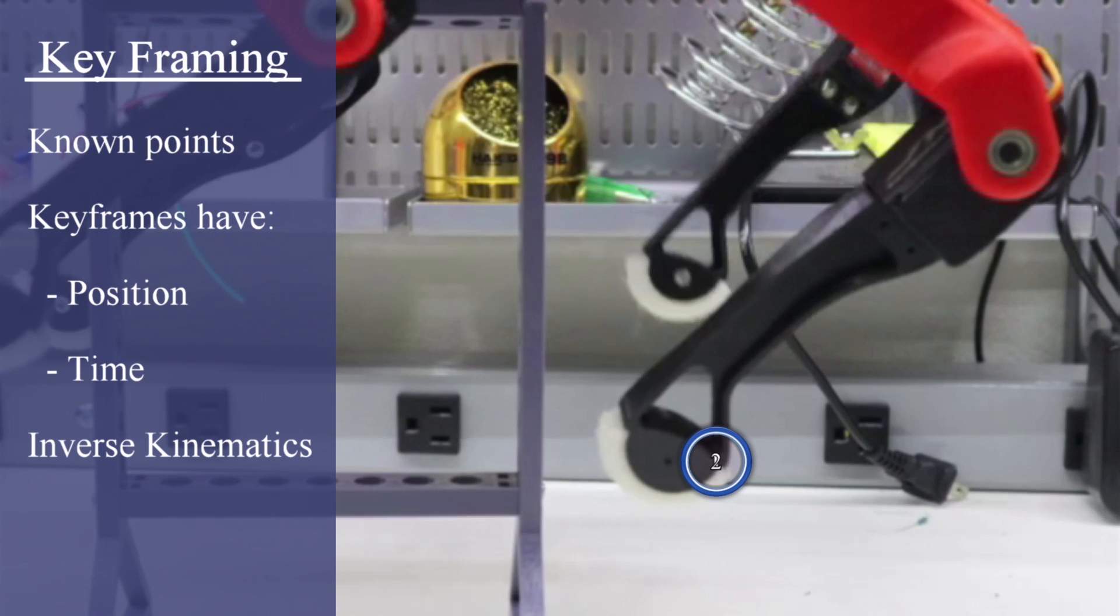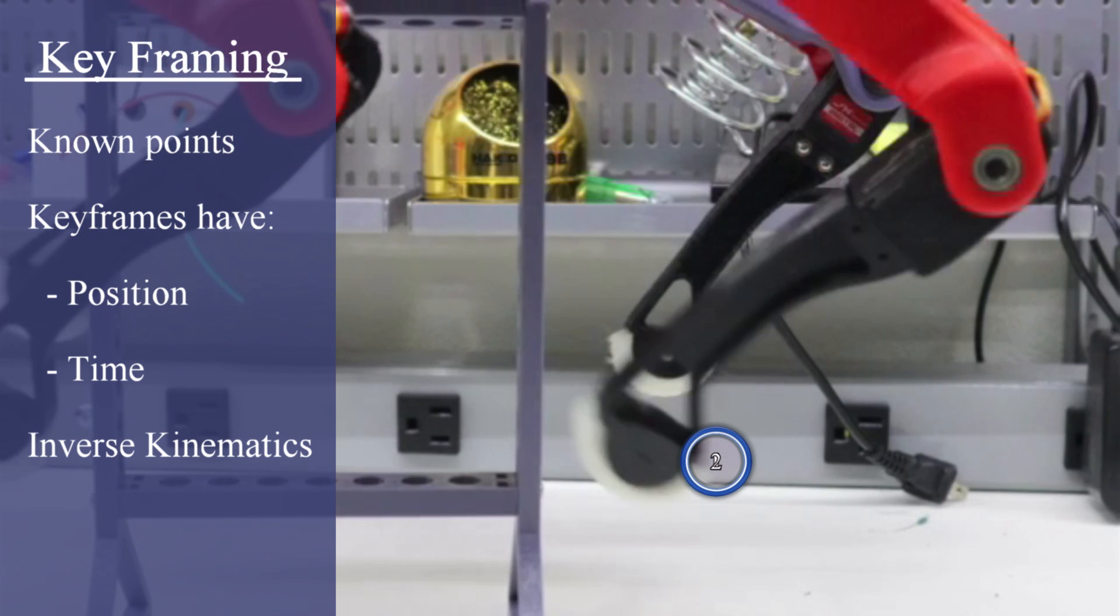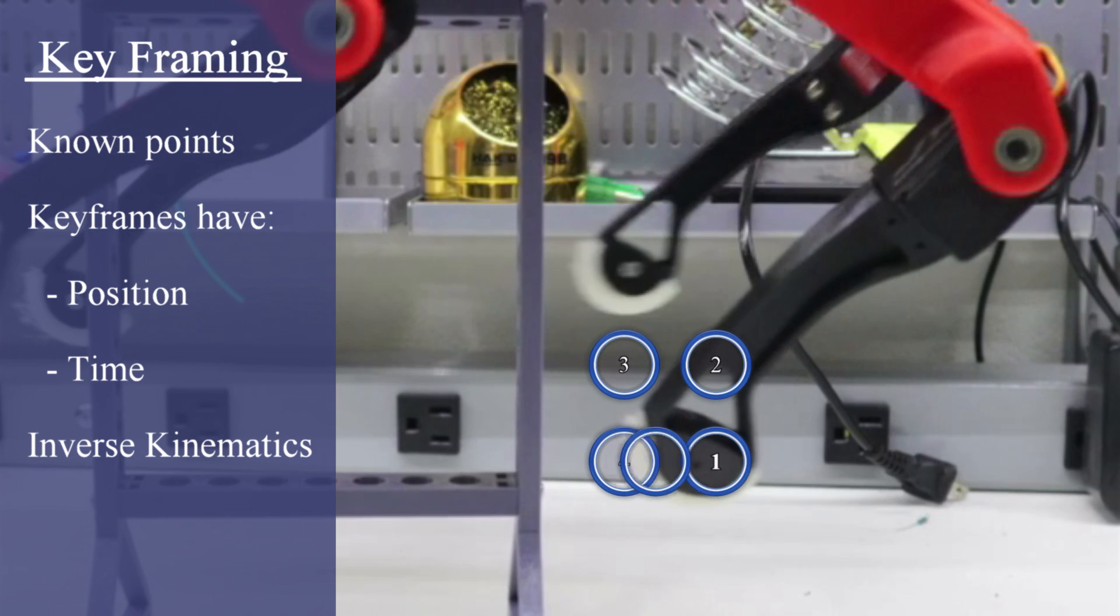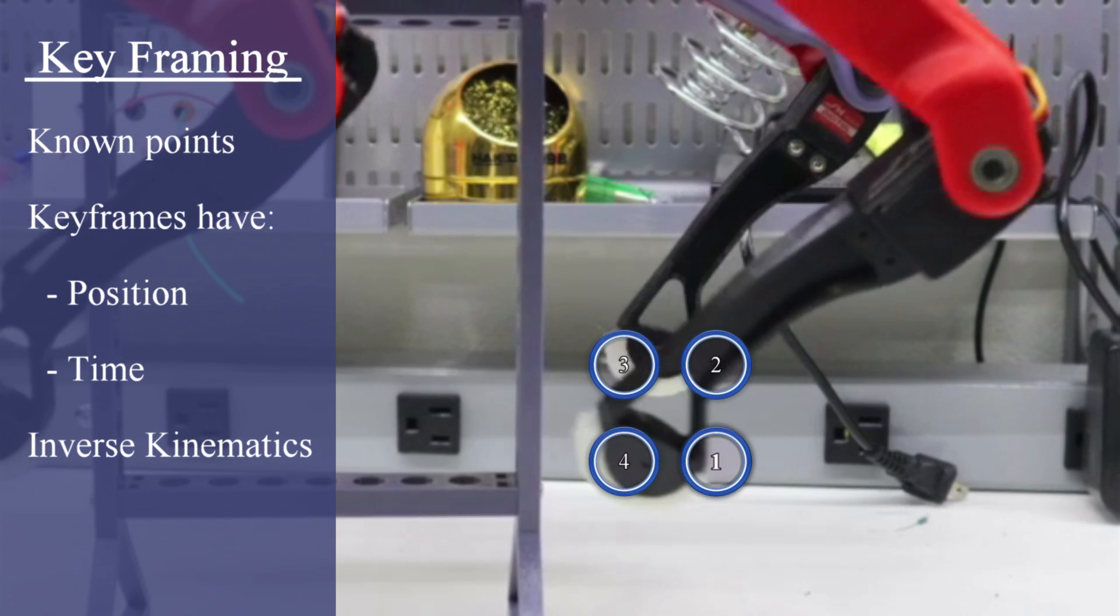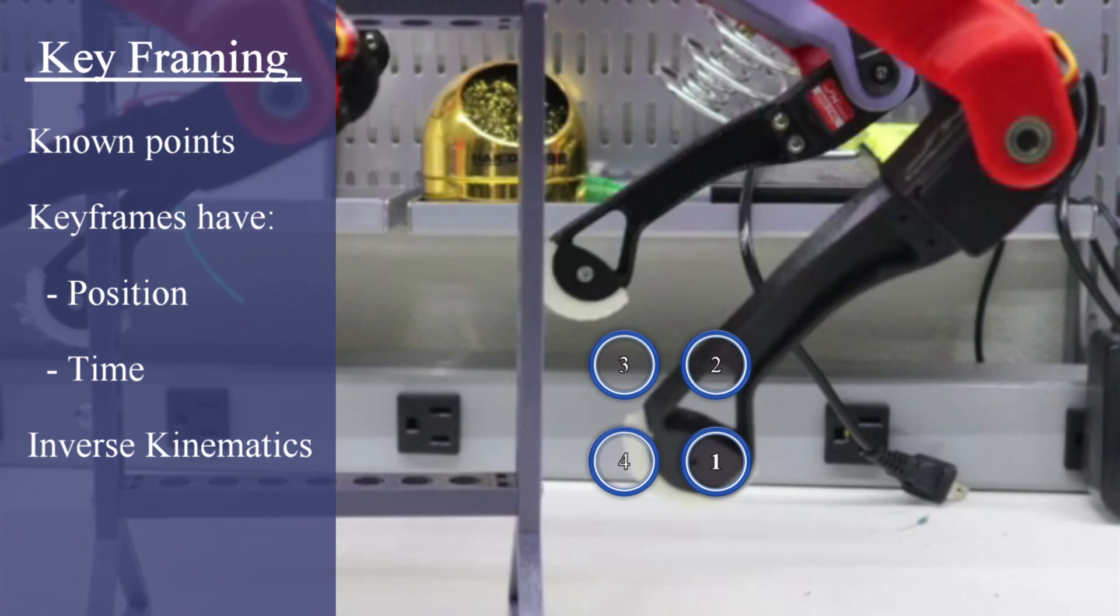In this animation, there are four keyframes. They move the foot up, forward, down, and back. This animation loops continuously to perform a forward motion walking gait.